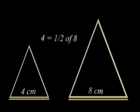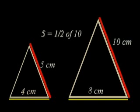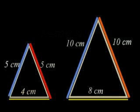This means that the sides of the smaller triangle are also half the length of the corresponding sides of the larger one. This means the sides of the smaller triangle are each 5 centimeters.